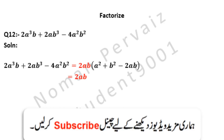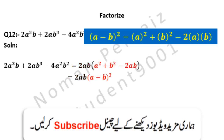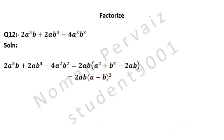Next we are going to apply a formula on the terms present in the bracket. The formula shown is: (a - b)² = a² + b² - 2ab. So we have written (a - b)². Hence this is our answer: 2ab(a - b)².